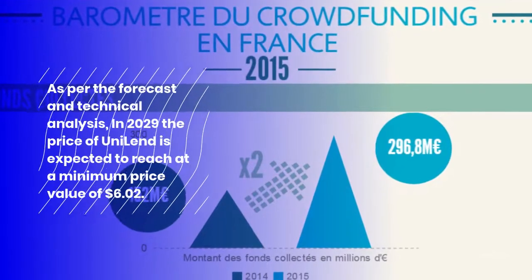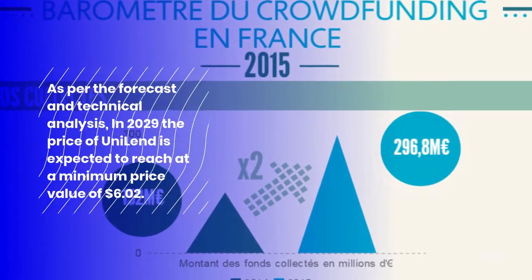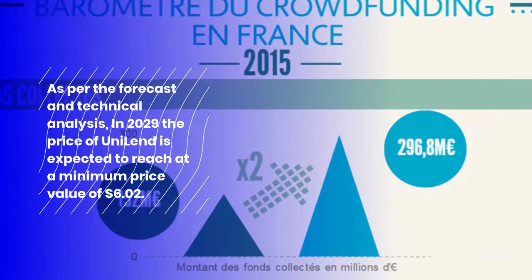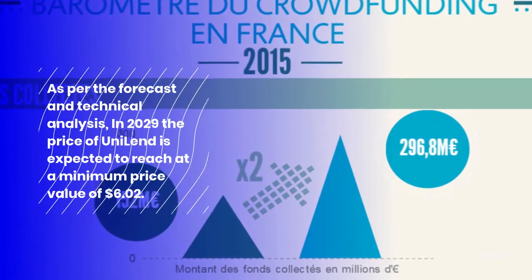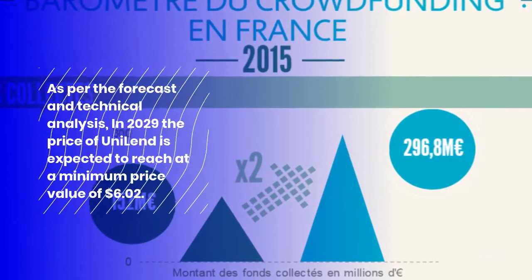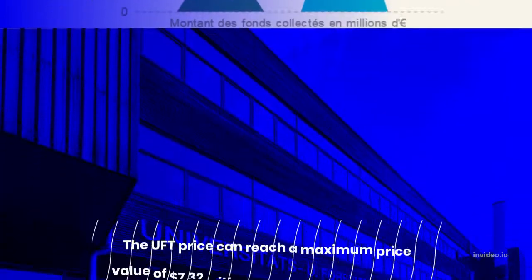Uniland Price Prediction 2029: As per the forecast and technical analysis, in 2029 the price of Uniland is expected to reach a minimum price value of $6.02.